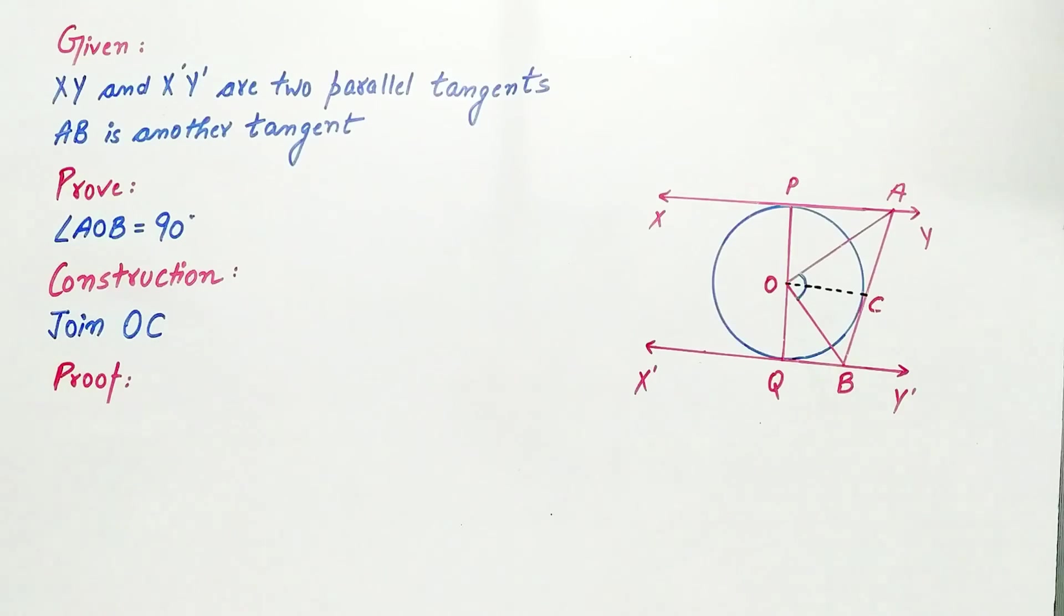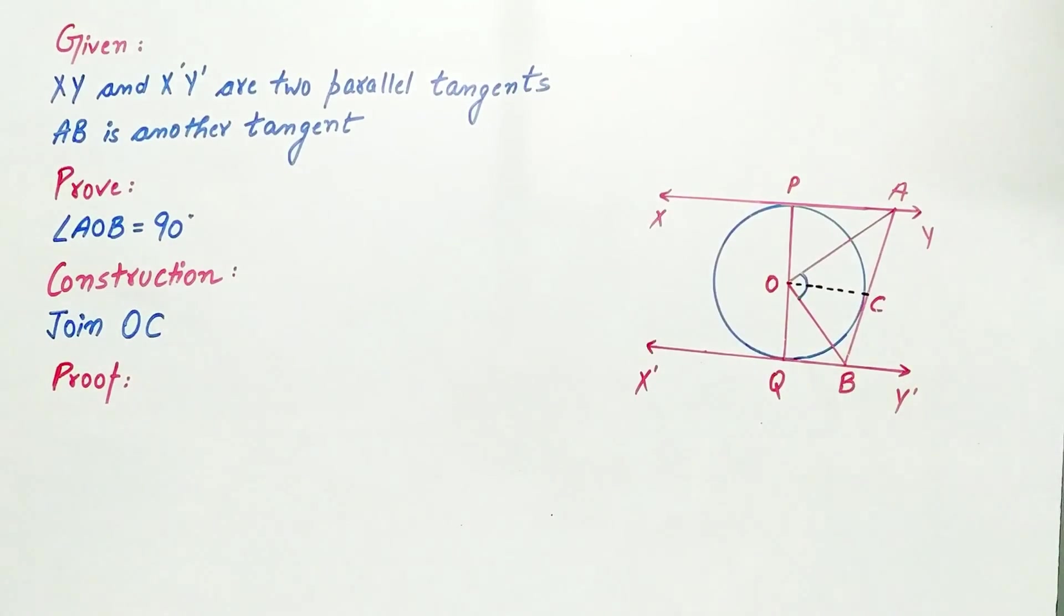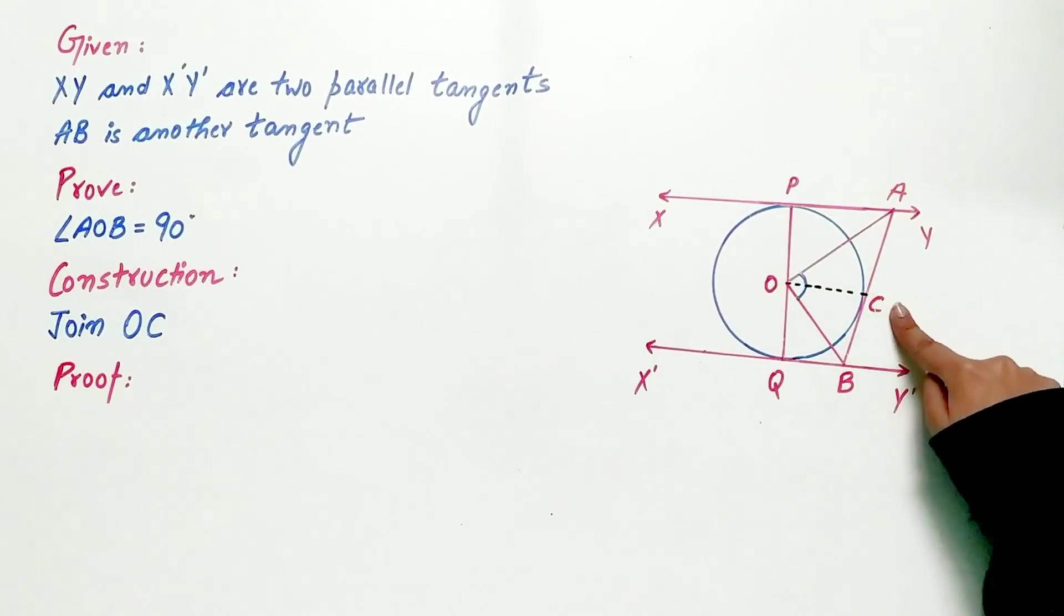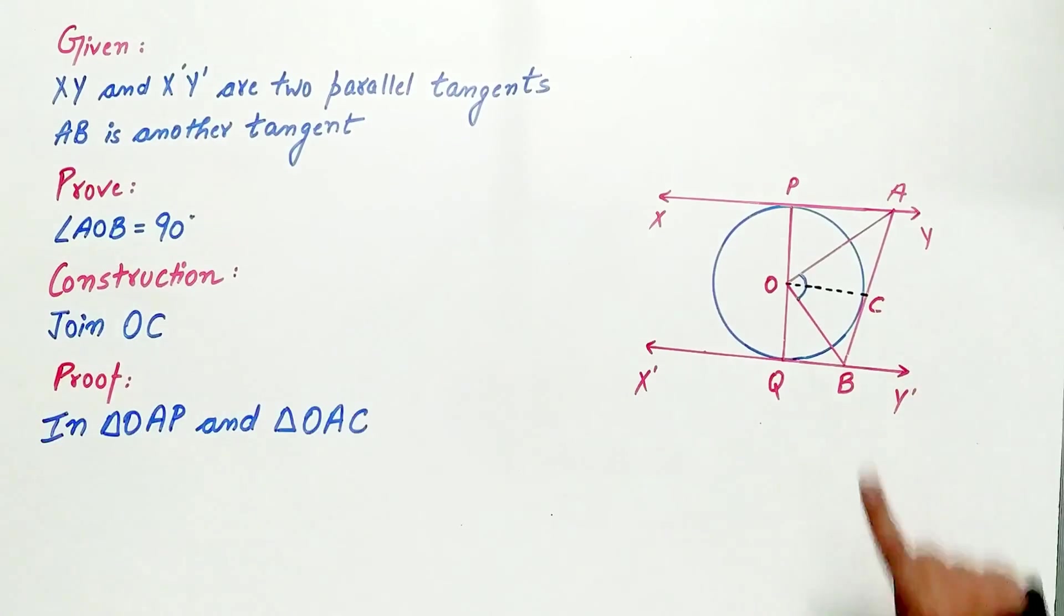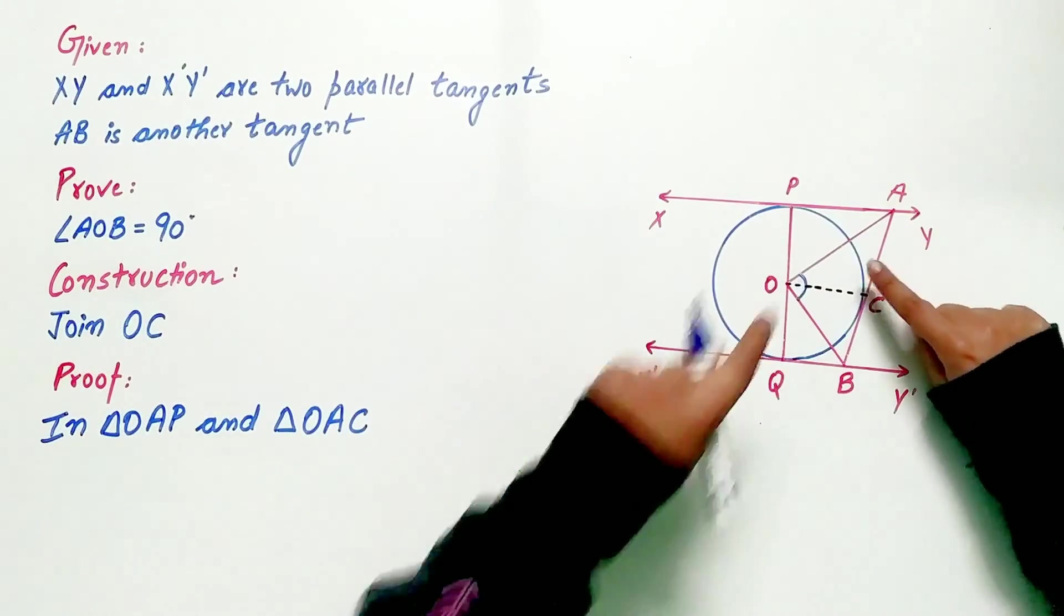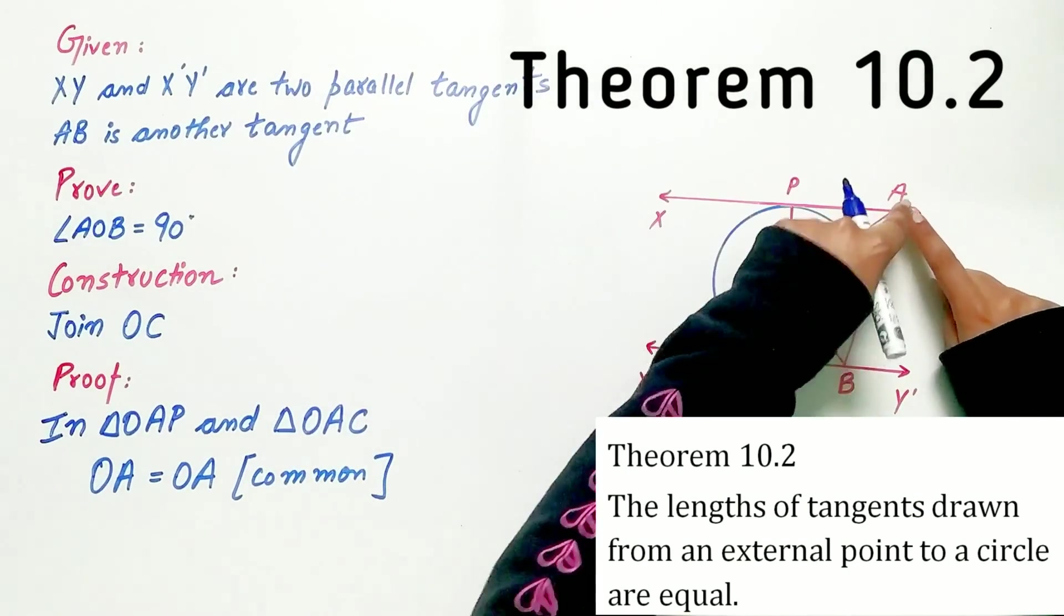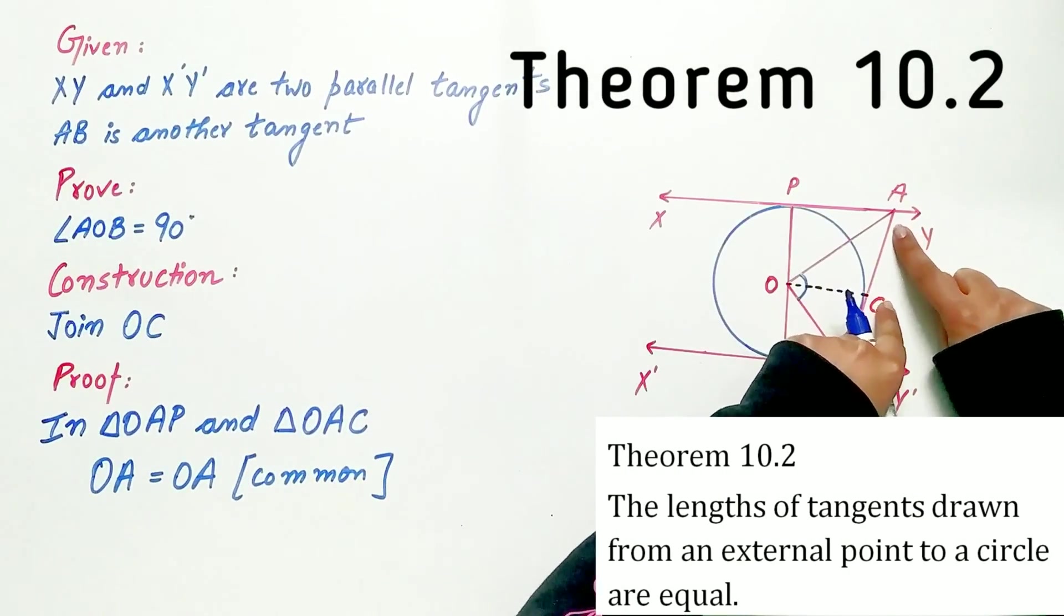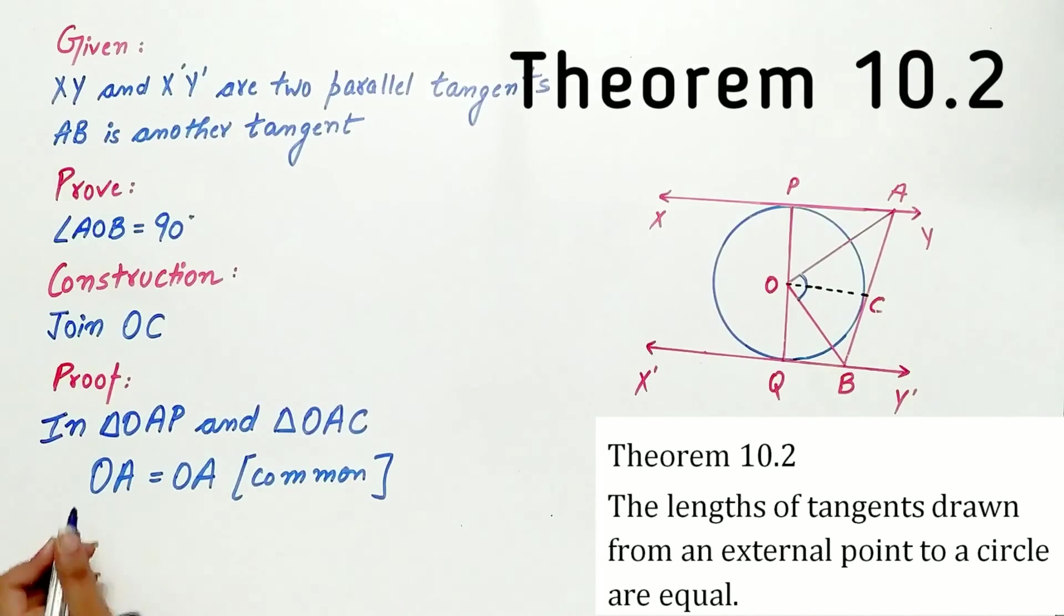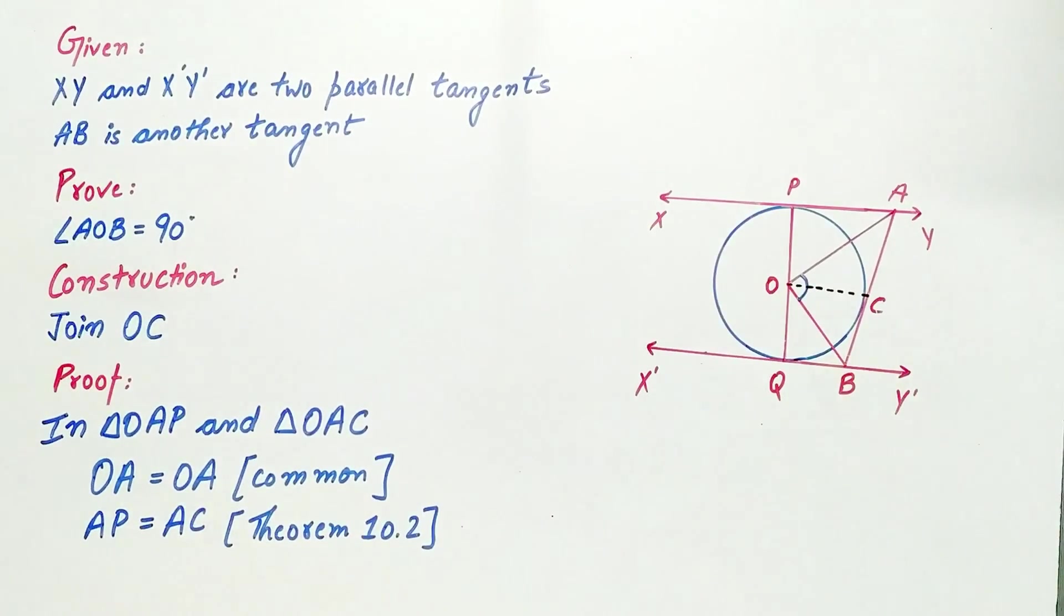Now look. Triangle OAP and triangle OAC. Now OA is common in both the triangles. AP is equal to AC by theorem 10.2 and OP is equal to OC.